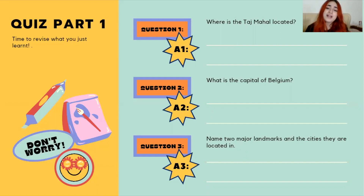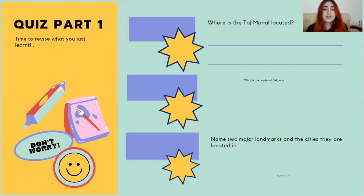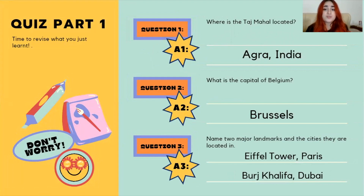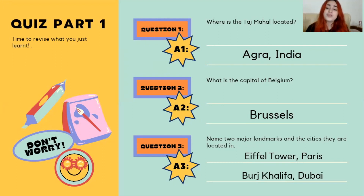Okay, I hope you're done. Let's revise the answers to see if you got them right. The first answer is: the Taj Mahal is located in Agra, India. The second answer is: the capital of Belgium is Brussels. And the third answer: you can pick any two major landmarks — for this one, I picked the Eiffel Tower located in Paris and the Burj Khalifa located in Dubai. Don't worry if you didn't get the answers right; you can always go back and revise the content.